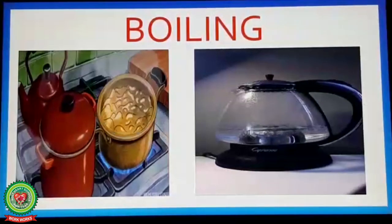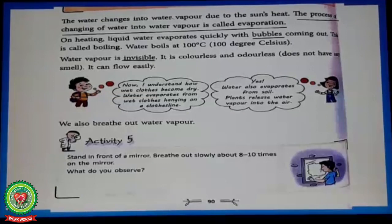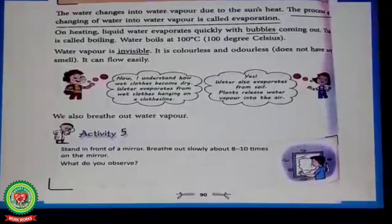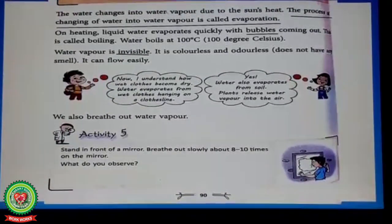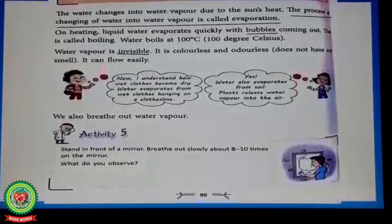Water vapor is invisible. It is colorless and odorless — it does not have any smell. It can flow easily. So the properties of water vapor are: number one, it has no color; number two, it has no smell; and number three, it can flow easily.